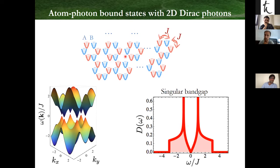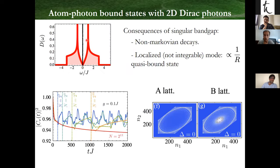The question is: if I put an emitter tuned to this Dirac frequency, what happens? Something quite curious occurs. There are certain consequences of this singular band gap nature. In the thermodynamic limit, you actually have decay — quite remarkable because the density of states is zero, and according to Fermi's Golden Rule you'd expect no decay. But in finite-size simulations, if you diagonalize to see if there is a qubit-photon bound state, the answer is that there is one.